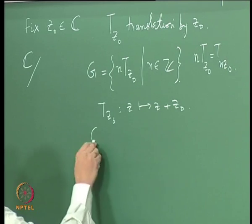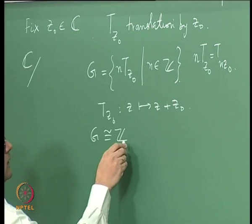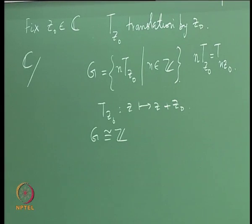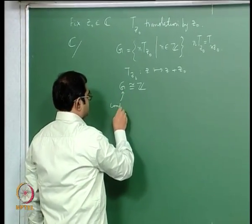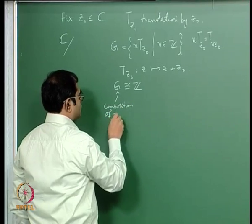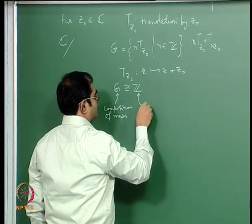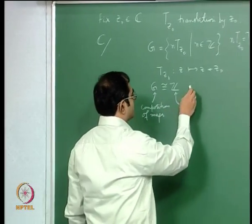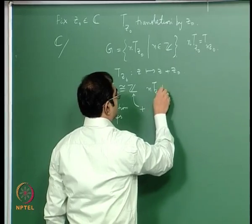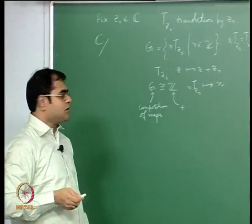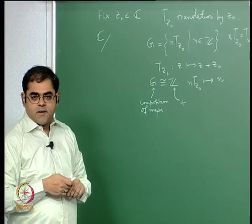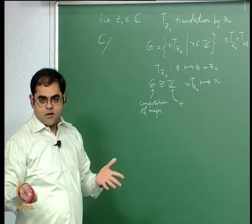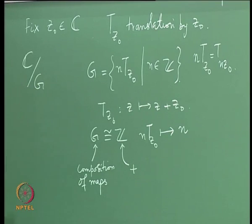This group G is isomorphic to the integers — under the operation of composition of mappings on the left, and under usual addition on the right. The isomorphism is gotten by simply sending n times T_{z₀} to the integer n. So this is just a group of translations by integer multiples of a fixed complex number. When you go modulo this group, you get the cylinder.